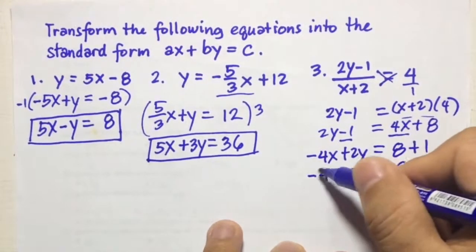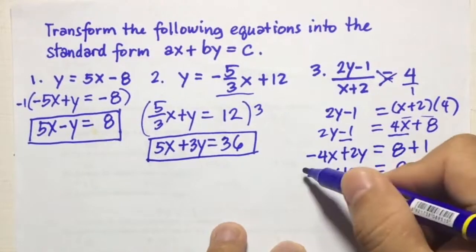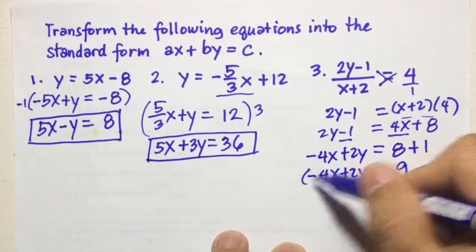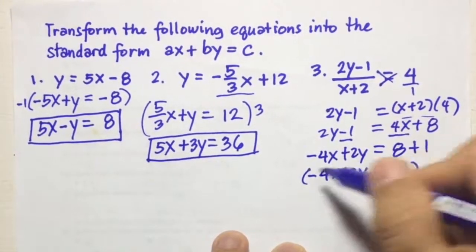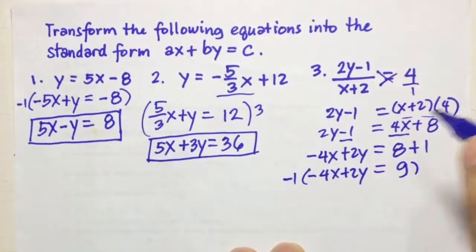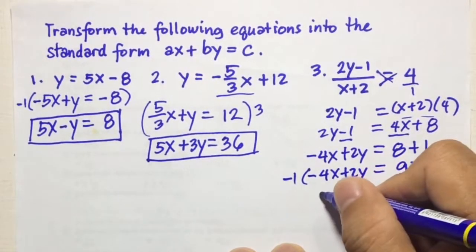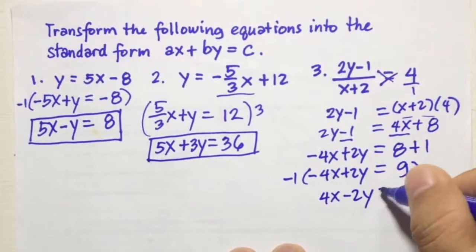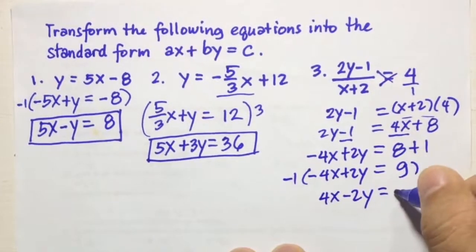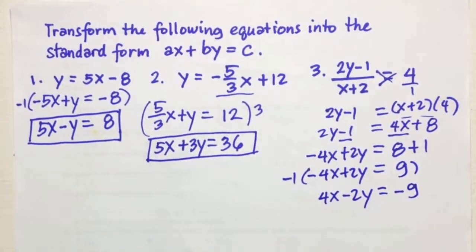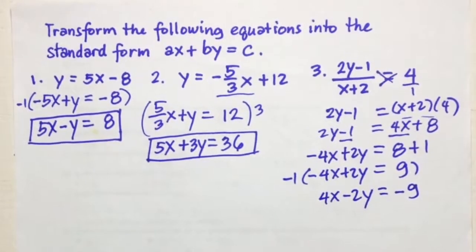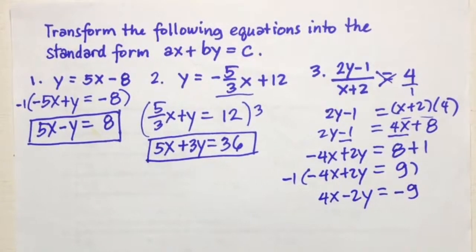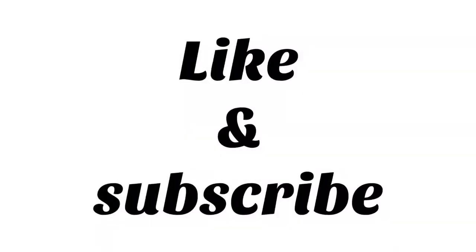To make the coefficient of X positive, we multiply the equation by negative 1, giving 4X minus 2Y equals negative 9. So the standard form answer for number 3 is 4X minus 2Y equals negative 9. I hope this video helped you. If you have questions about the topic, please comment down below, and see you next time.